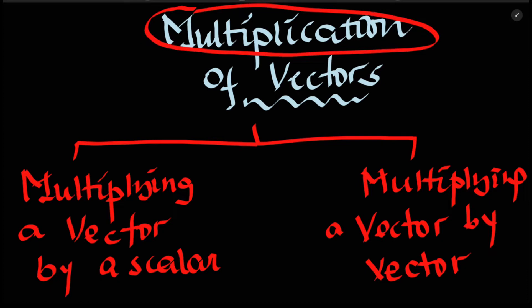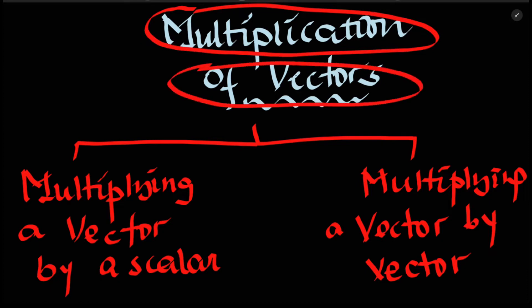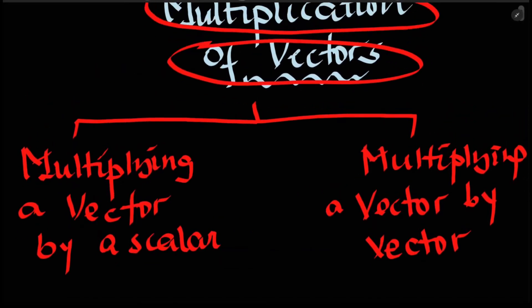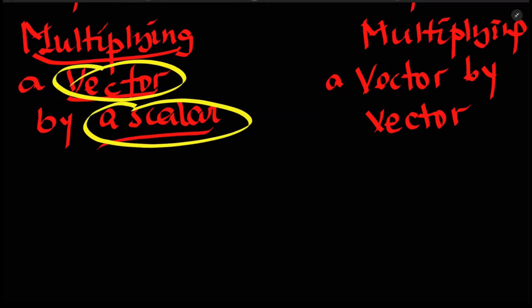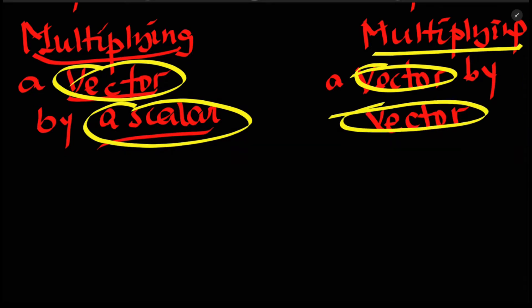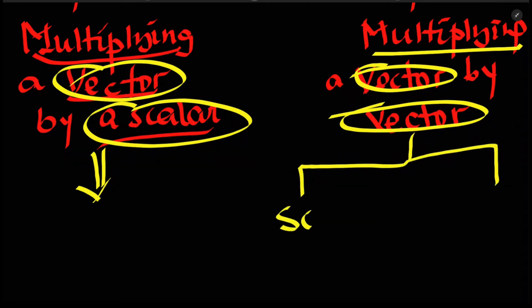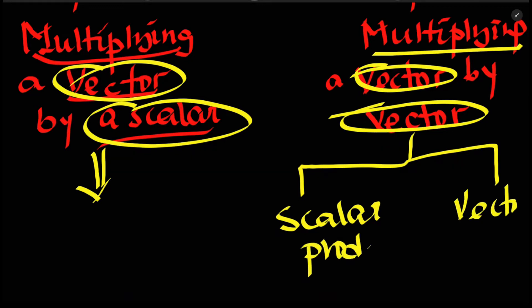Now multiplication of vectors. How can you add the channel? Addition and subscribe. So this is the vector multiplication. Vector multiplication — multiplying a vector by scalar. Multiplying vector by vector: scalar product, vector product.